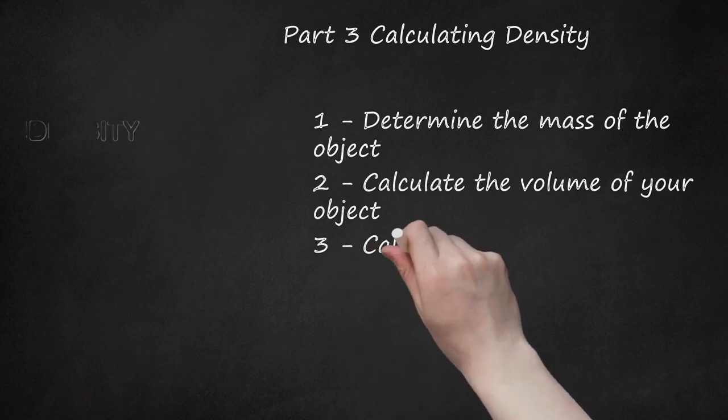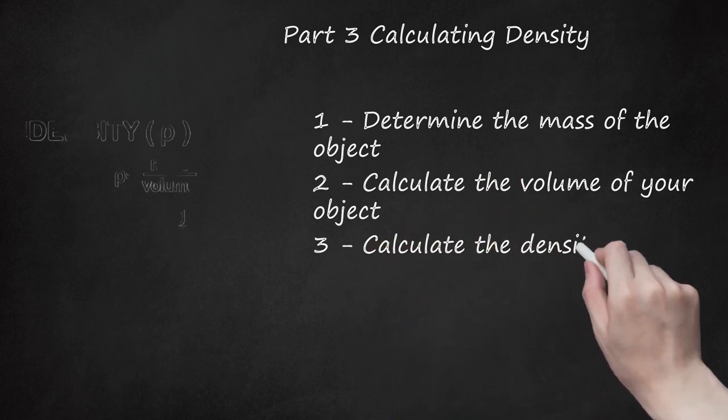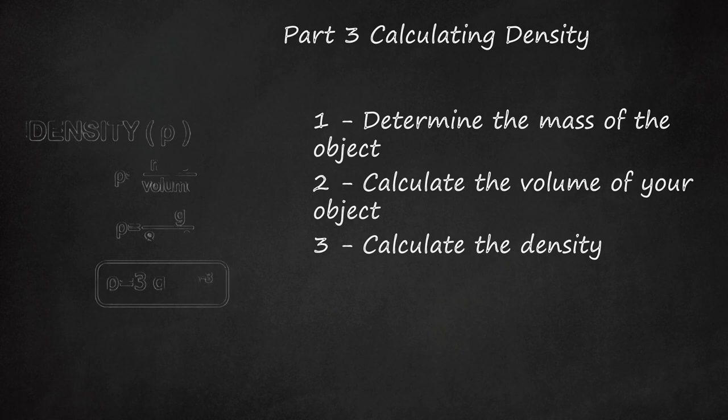Step 3: Calculate the density. Density is defined as mass divided by volume. To finish your measurement of density, divide the mass you measured by the volume you calculated. The result is the density of the metal measured in g/cm³.